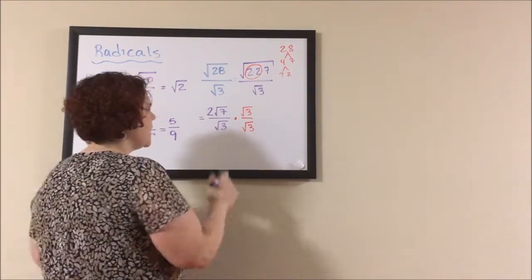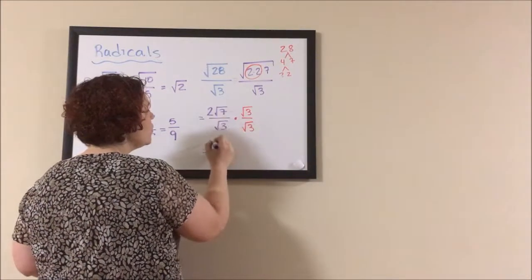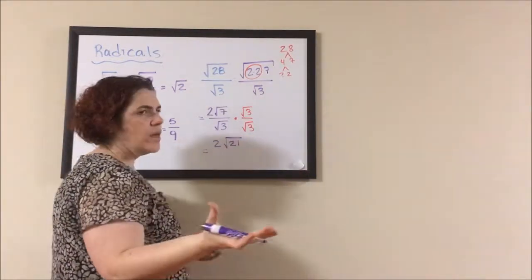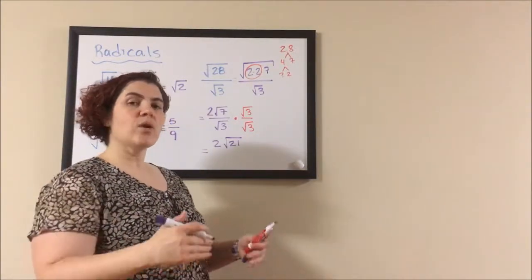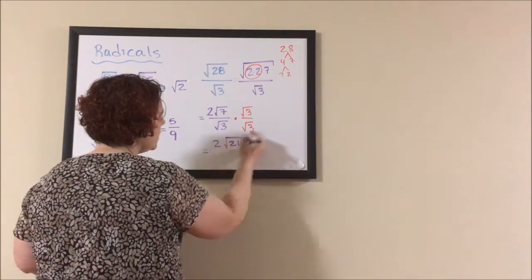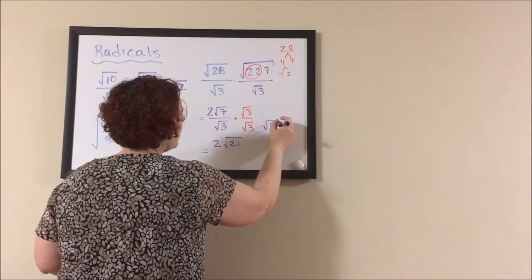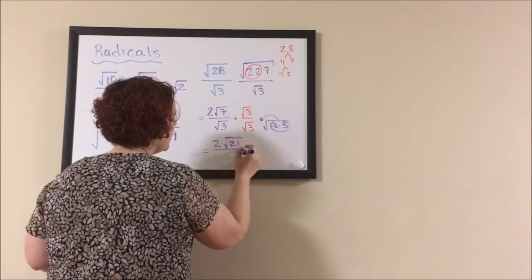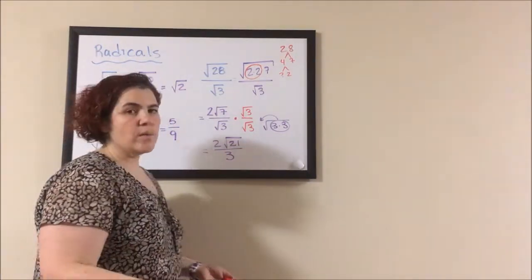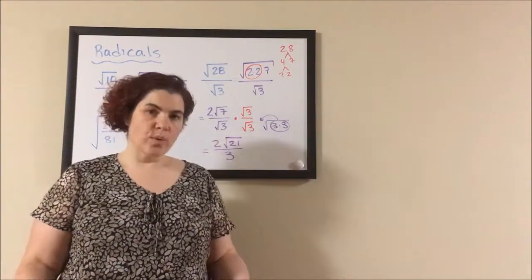What this does is it takes that square root of 7 in the numerator and turns it into a square root of 21, which is fine. We don't care if the numerator is ugly. We only care about the denominator. And then we have the square root of 3 times the square root of 3, which is the square root of 3 times 3. They pair, come out, and we're left with a 3. We've now rationalized our denominator because what's in the denominator is a counting number. No square root.